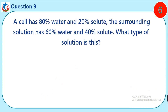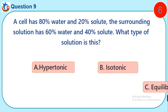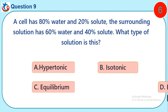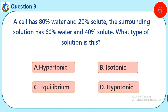Question 9. A cell has 80% water and 20% solute. The surrounding solution has 60% water and 40% solute. What type of solution is this? A. Hypertonic. B. Isotonic. C. Equilibrium. D. Hypotonic.